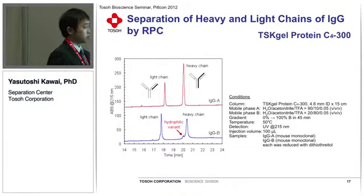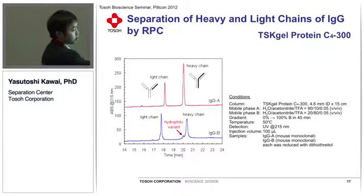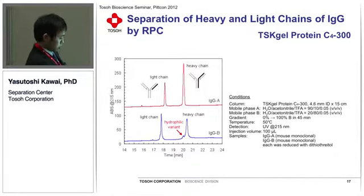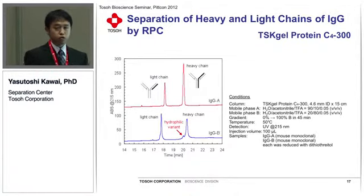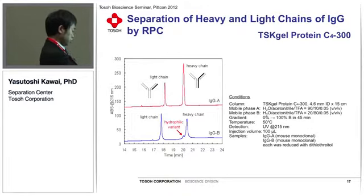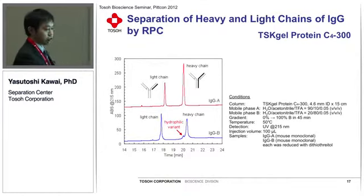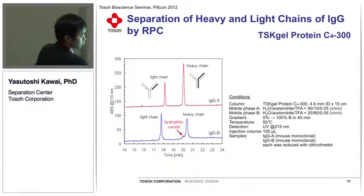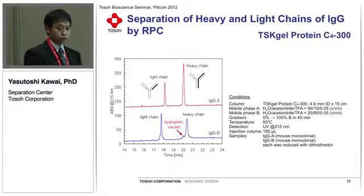I'd like to present another study. This slide presents the analysis of two antibodies, IgG-A and IgG-B. Each antibody was reduced to dissociate into heavy chain and light chain and then applied to the RPC column. You see small differences in hydrophobicity between IgG-A and IgG-B. In addition, the two chains of IgG-B were eluted as a broad peak with a shoulder, indicating that IgG-B was heterogeneous, containing hydrophilic variants.